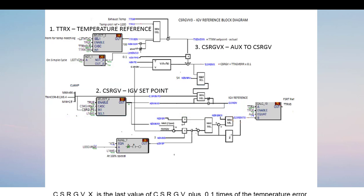CSRGVX is the last value of CSRGV plus 0.1 times the temperature error. This is the group of blocks that produces CSRGVX.